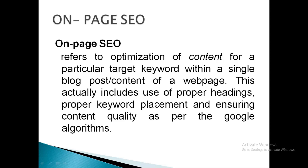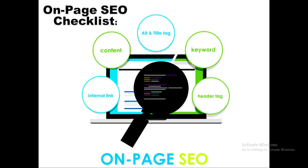On-page SEO includes proper use of headings, proper keyword placement, and ensuring all content on the website or web page is quality content — not copied from anywhere. For the parameters related to Google algorithms, you can refer to the lecture linked in the description box. When we do on-page SEO for a web page, we have these checking parameters: title tag, alt image tags, keyword placement, header tags, content optimization, and internal linking.